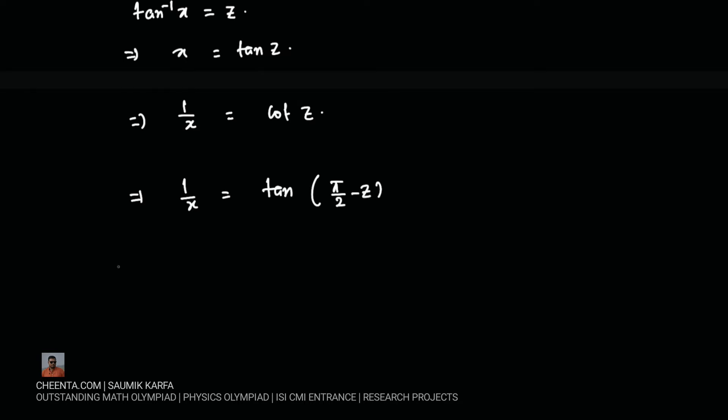which means tan inverse of 1 by x is equal to pi by 2 minus z where z was nothing but tan inverse x. So tan inverse x becomes pi by 2 minus tan inverse 1 by x.